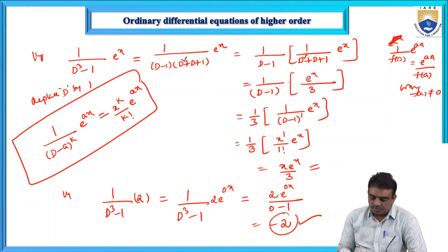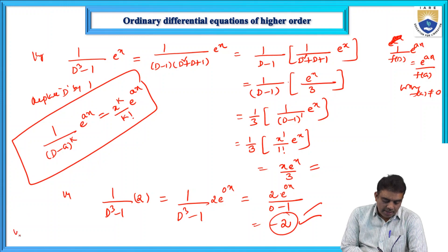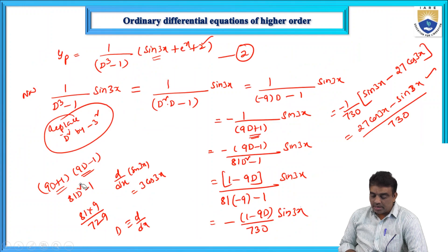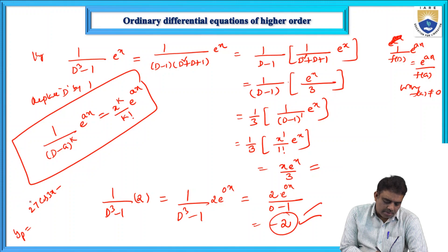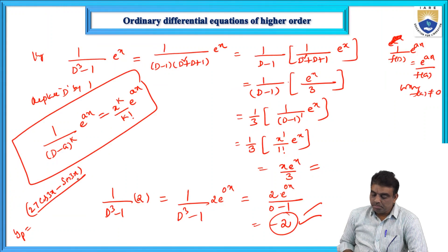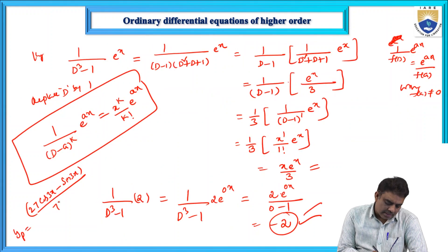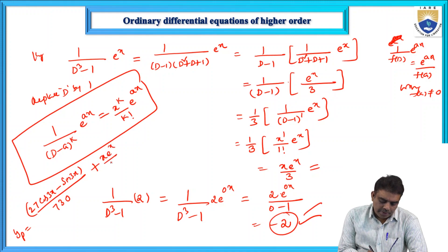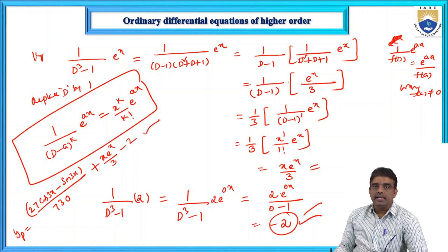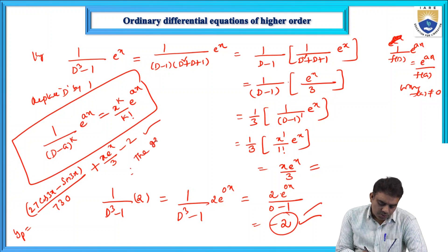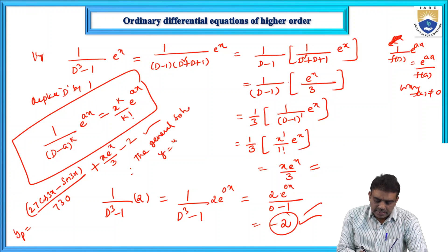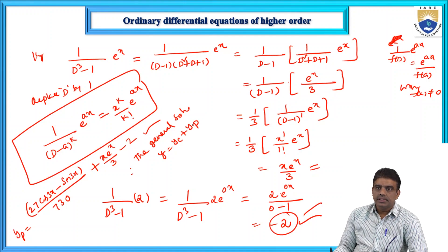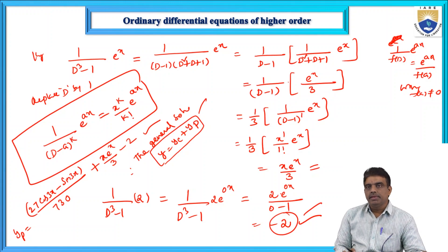Therefore yp = (27cos3x - sin3x)/730 + xeˣ/3 - 2. The general solution is y = yc + yp, where we add the complementary function and the particular integral to get the complete general solution of the given differential equation.